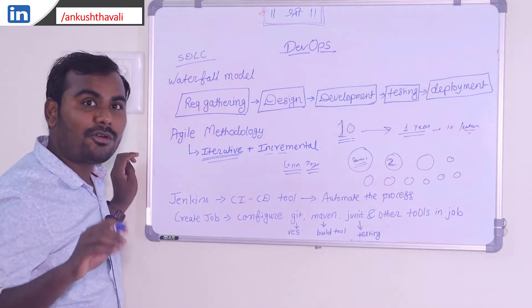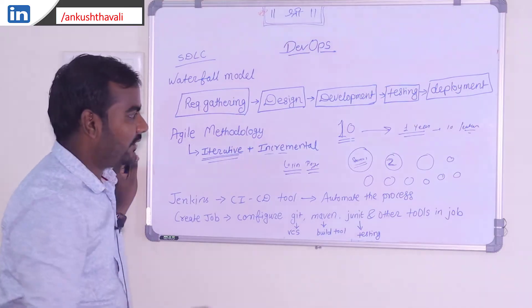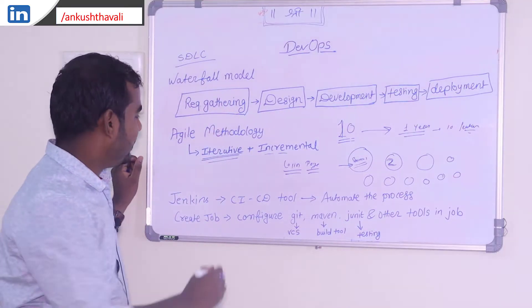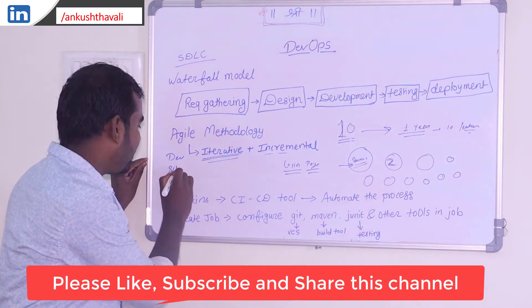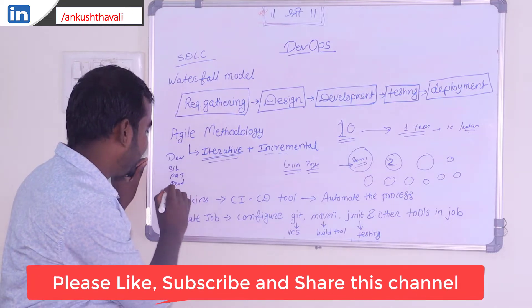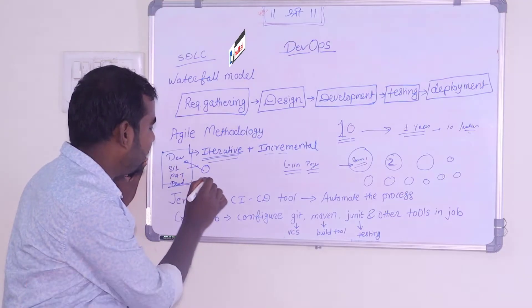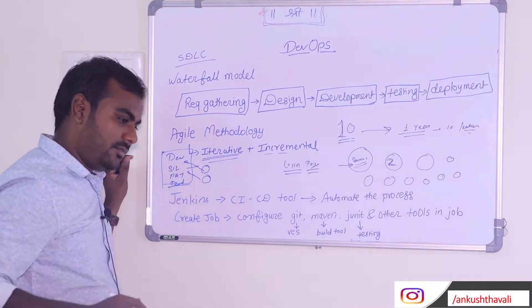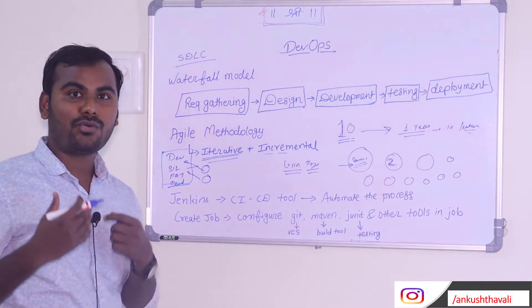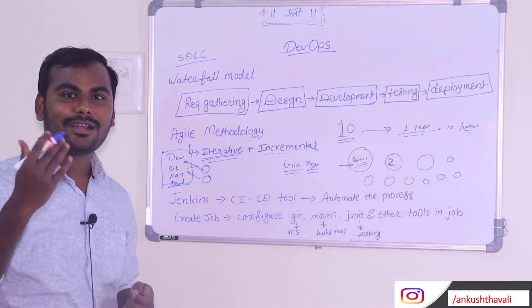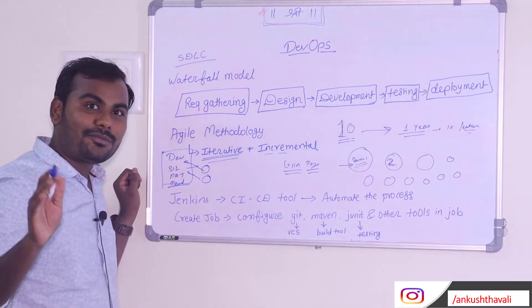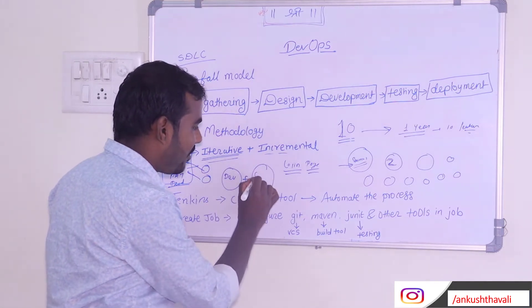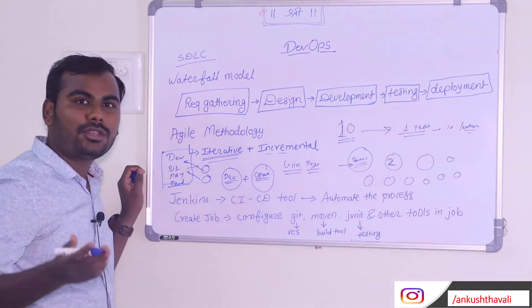Now let's talk about DevOps. In Agile methodology, we have 10 sprints for 10 functionalities. After every functionality, we need to deploy that code starting from the dev environment, then the SIT environment, UAT environment, and then the production environment. A common problem observed is: the code working on my machine will not work on another machine, causing conflict between the development team and the operational team.